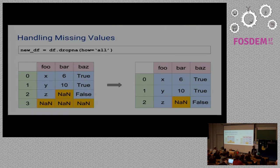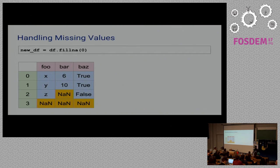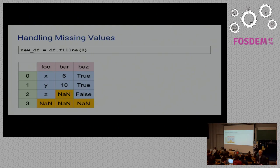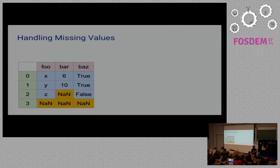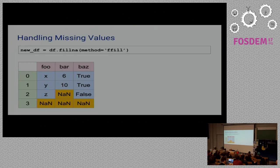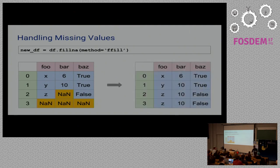Another case is filling the NaN values. You can pass a default value — like zero or minus one — and it will simply replace every undefined value with that default. If you don't want to fill with a fixed value, you can use fillna with the ffill parameter, which stands for forward fill. It takes the value just above the NaN and copies it down.